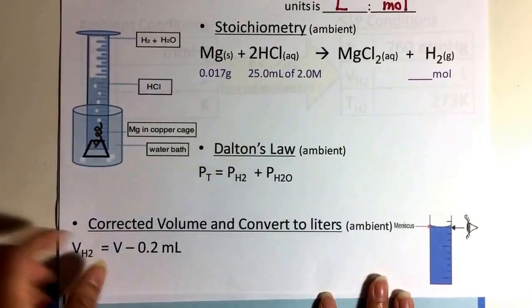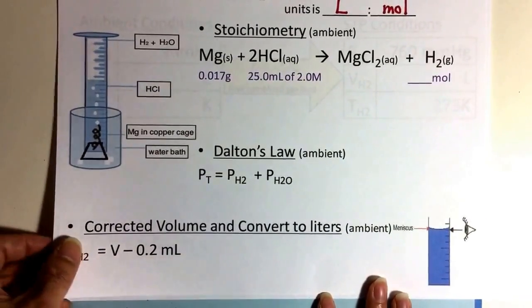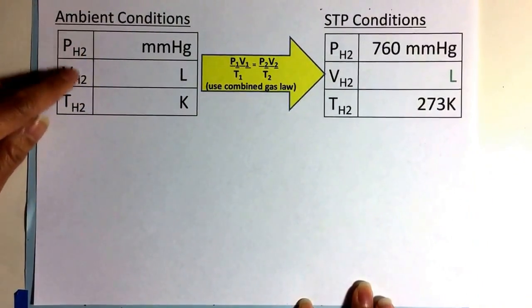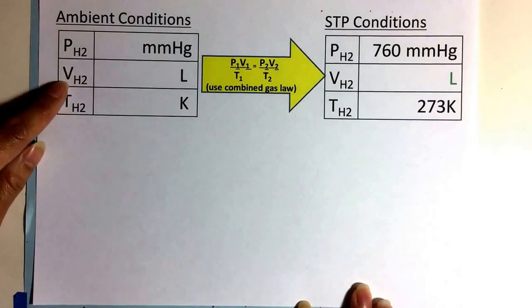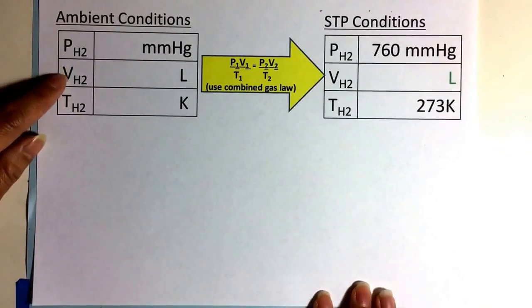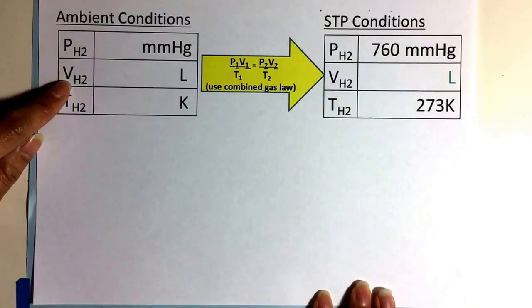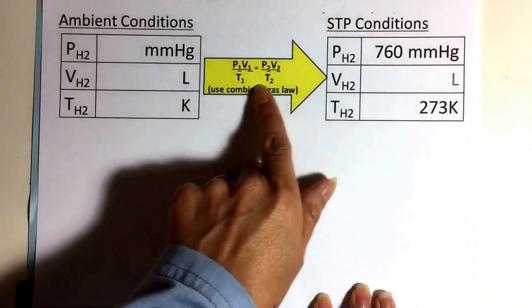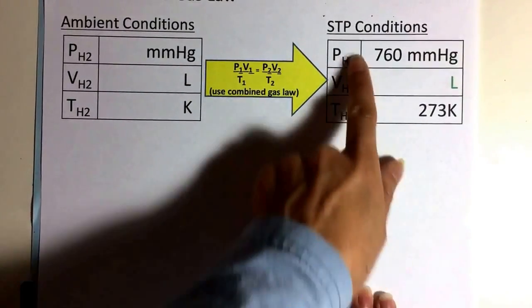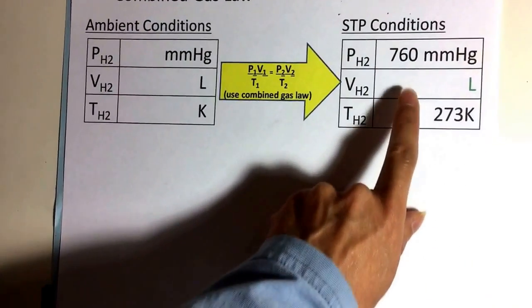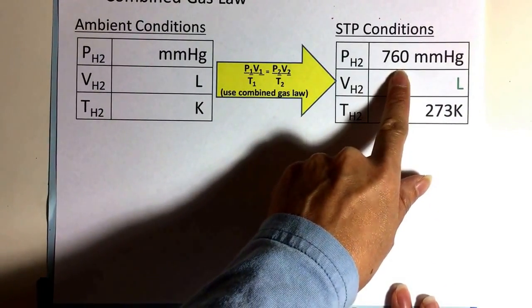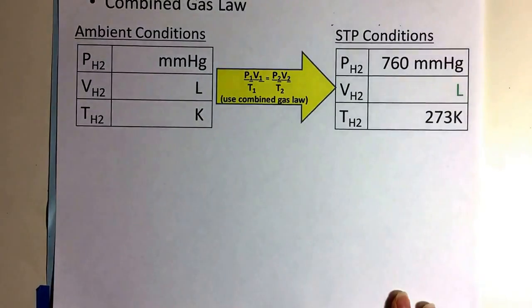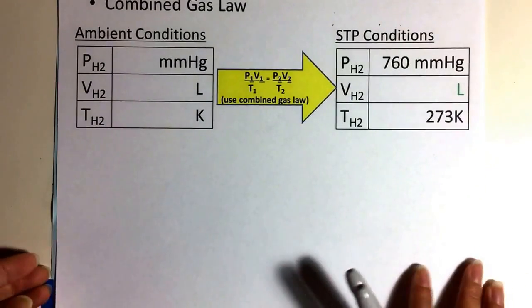Now, after you have the volume of the hydrogen gas, then you will plug your volume of the dry gas, which is hydrogen gas here, in the ambient condition, and also for the volume of the hydrogen gas here from the corrected volume, and then the temperature of the hydrogen gas. And then you're going to ratio it out to the STP conditions, which is 760 millimeters of mercury, as far as pressure, and then temperature 273 Kelvin.